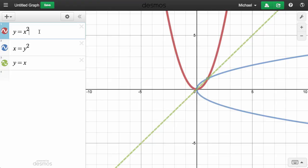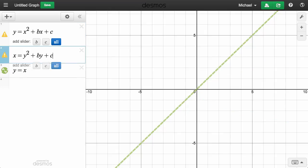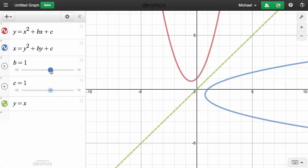Adding sliders allows for dynamic exploration of the symmetric properties. Let's tack on plus bx plus c and plus by plus c, and click all to add the sliders. Animating these sliders allows you to explore.